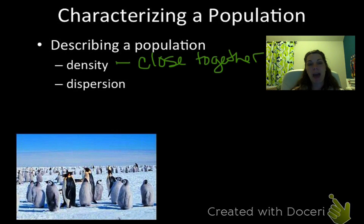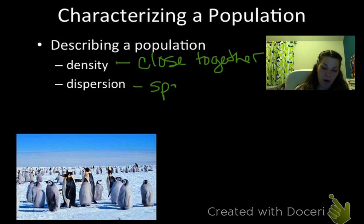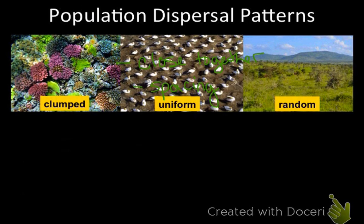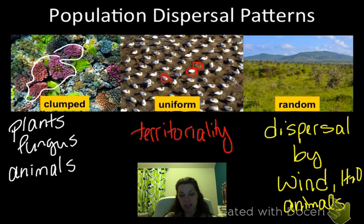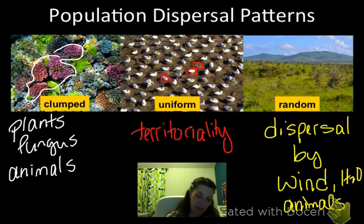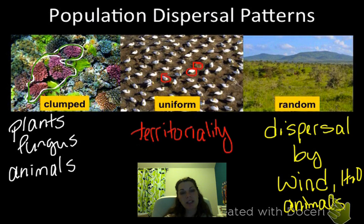Dispersion is the pattern of spacing between individuals — how are they arranging themselves? There are different spacing patterns we can look at. The first one is clumped, and you can see a circled clump of organisms. Clumped organisms can include things like plants, fungi, and animals. Clumped is actually the most common pattern of dispersal that we see.